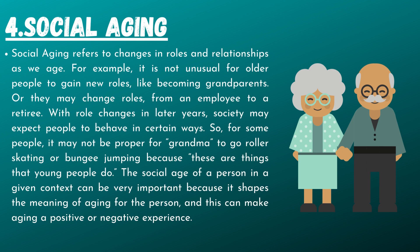Social aging refers to changes in roles and relationships as we age. For example, it is not unusual for older people to gain new roles, like becoming grandparents, or they may change roles from an employee to a retiree. With role changes in later years, society may expect people to behave in certain ways. For some people, it may not be proper for grandma to go roller skating or bungee jumping because these are things that young people do. The social age of a person in a given context can be very important because it shapes the meaning of aging for the person, and this can make aging a positive or negative experience.